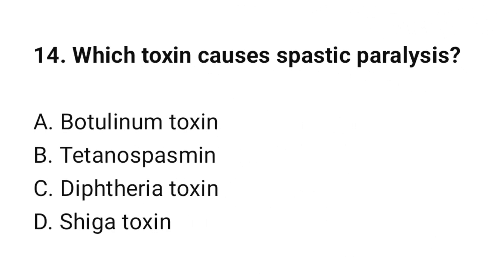Question number 14: Which toxin causes spastic paralysis? The correct option is B: Tetanospasmin.